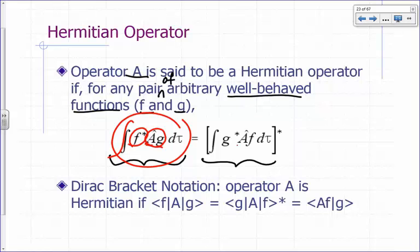That should give you the same result if you do it the other way: apply the operator first on f instead of g, multiply it by the complex conjugate of g, then take the complex conjugate of the result. If those two sides are equal regardless of what f and g are, then you say operator A is Hermitian.